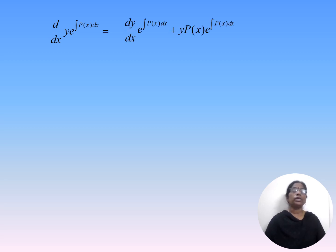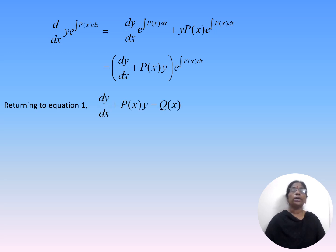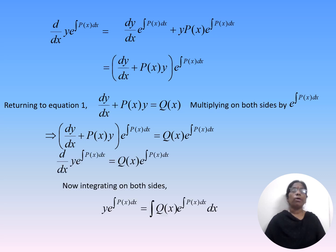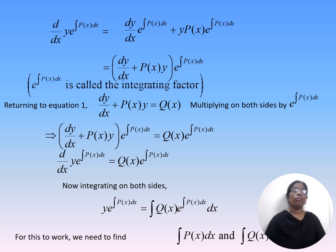Using the product rule of differentiation, d/dx of [y·e^(∫P(x)dx)] equals dy/dx·e^(∫P(x)dx) + y·P(x)·e^(∫P(x)dx), which equals [dy/dx + P(x)·y]·e^(∫P(x)dx). Here, e^(∫P(x)dx) is called the integrating factor.